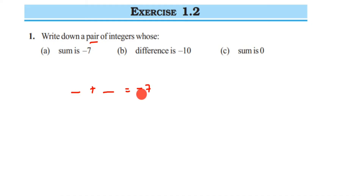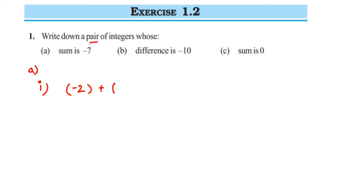I'll show two examples for the first question. Example one: I'll take both integers as negative. Take minus 2 and minus 5. When adding integers with the same sign, you add them and keep the sign. So 2 plus 5 is 7, and since both are negative, the answer is minus 7.